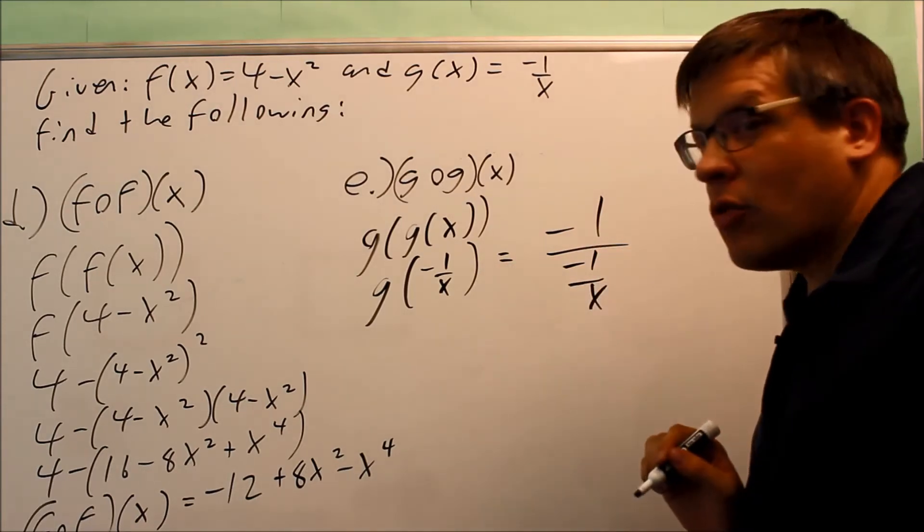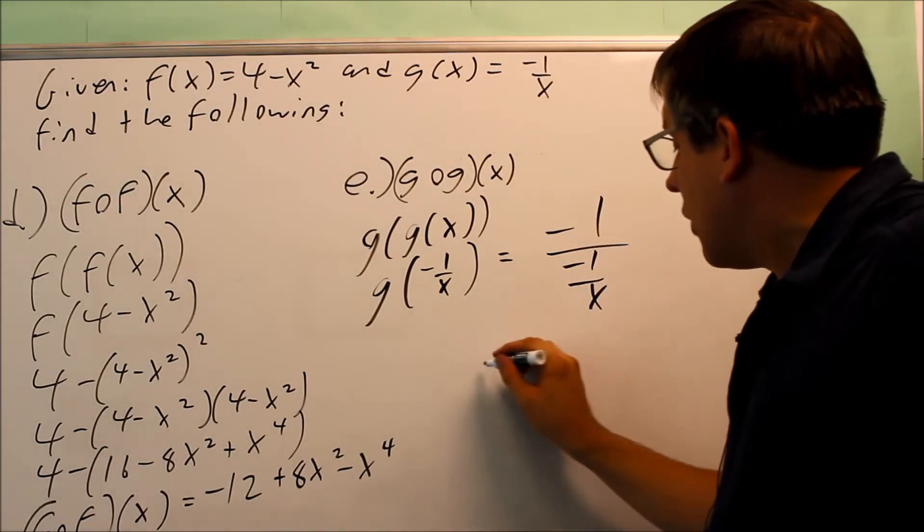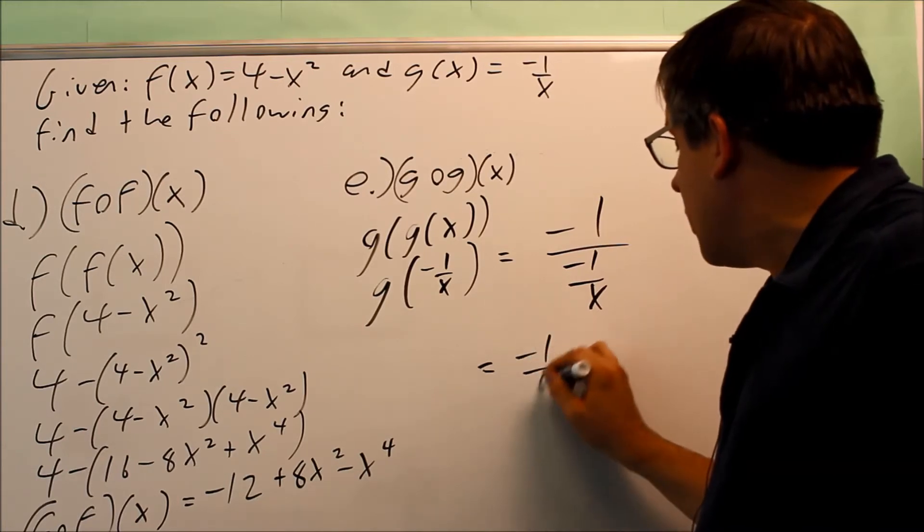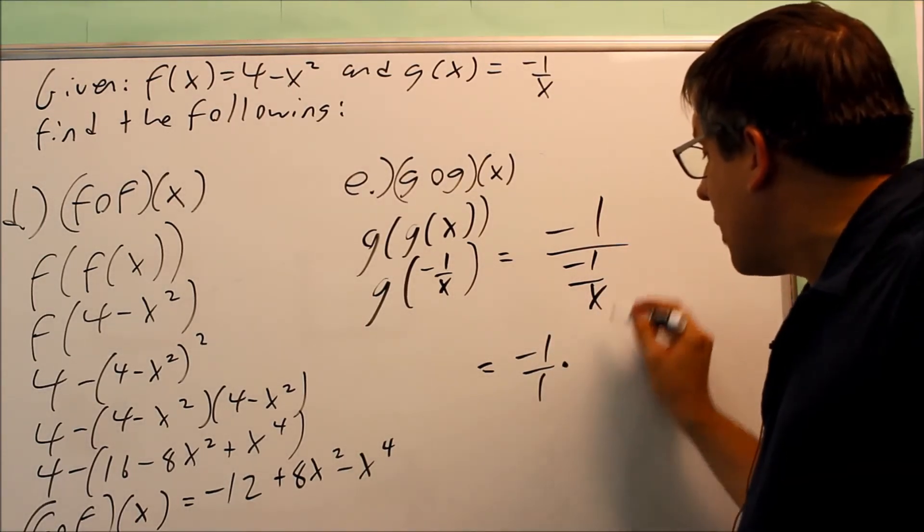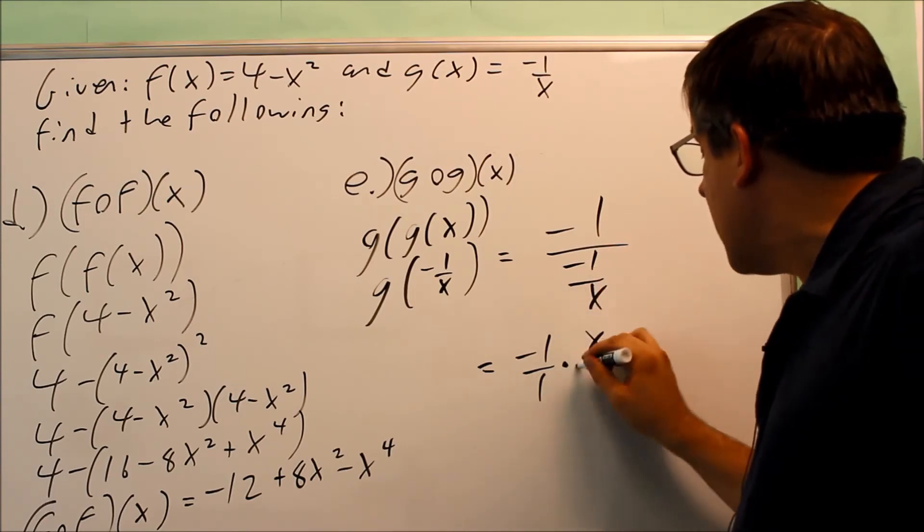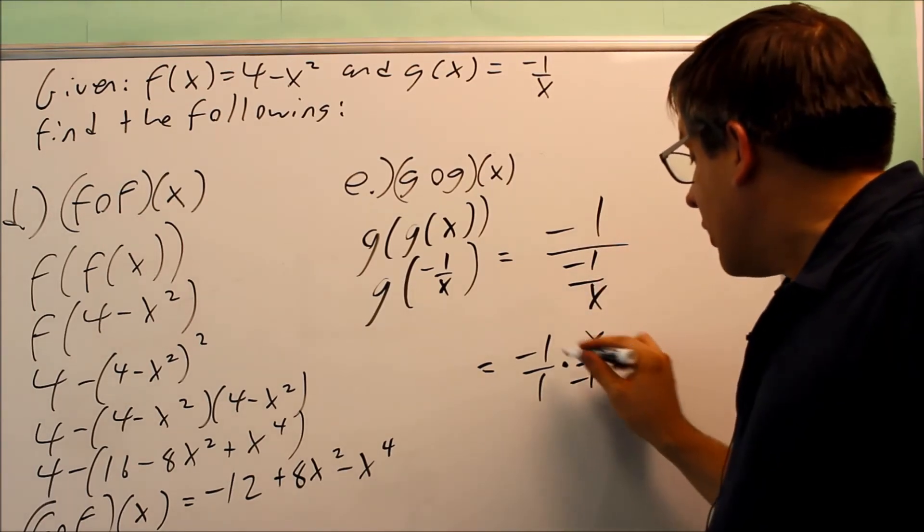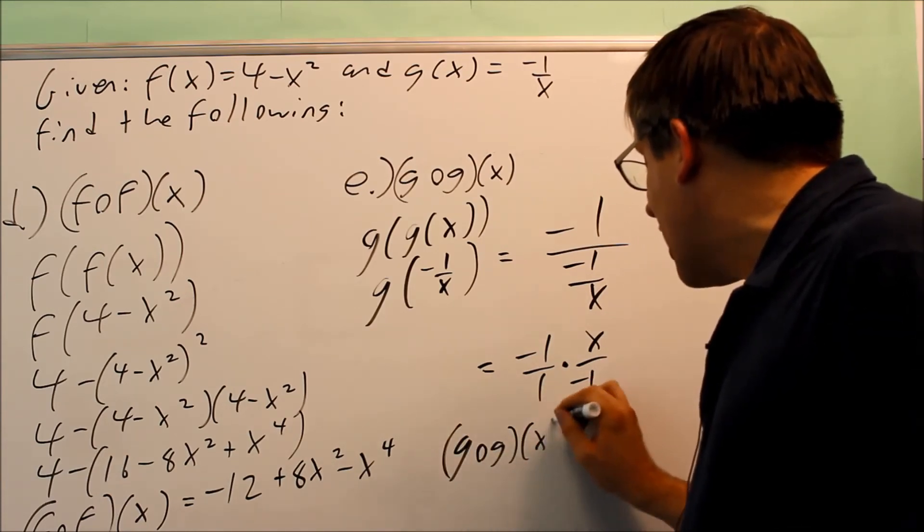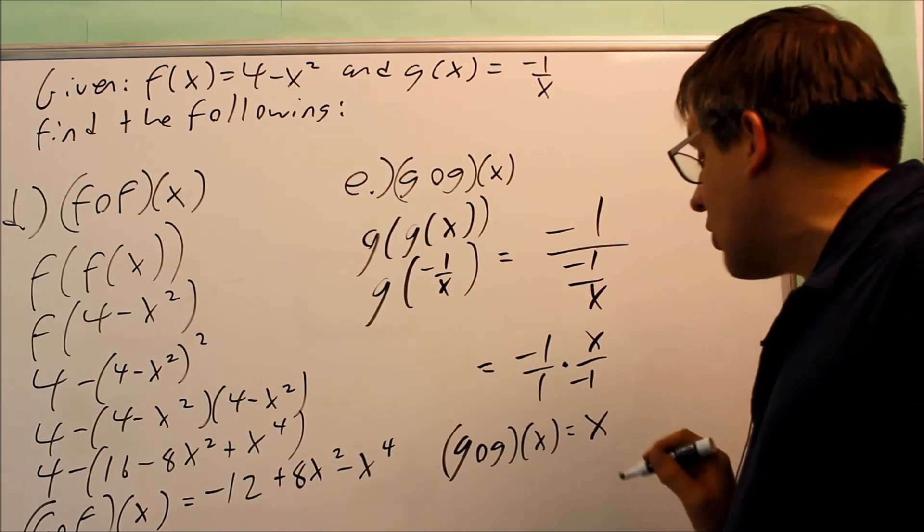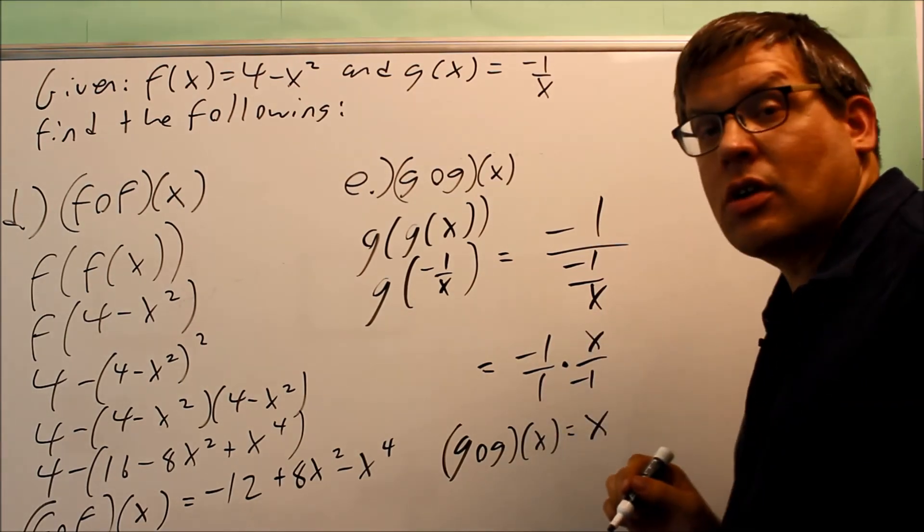Negative 1 over x, I have that one. So now I need to flip this. The top one can be written as negative 1 over 1. Just negative 1 there. Multiplying it by the reciprocal of the bottom one, that would be x over negative 1. And then the negative 1's are going to cancel. So your final answer, you get g of g of x is going to equal just x only because the other negative 1's cancelled out.